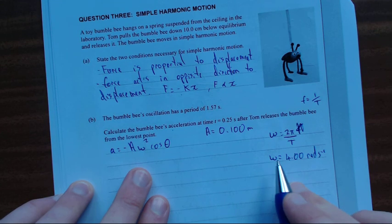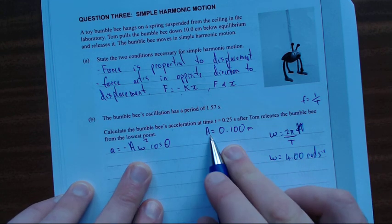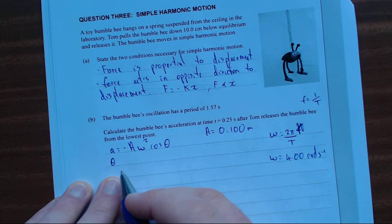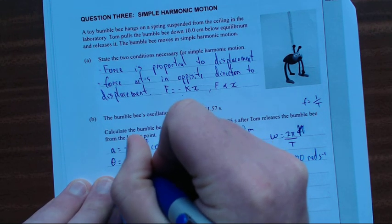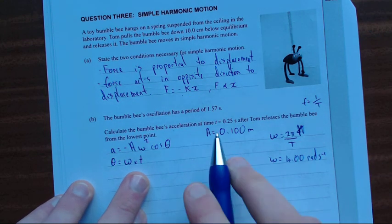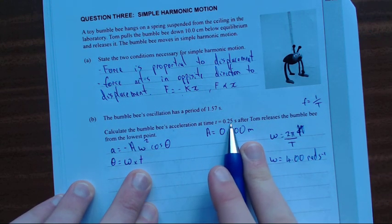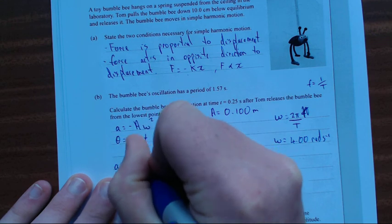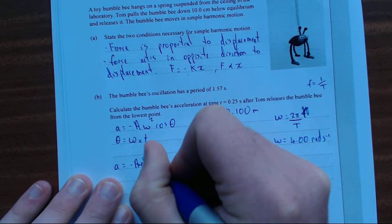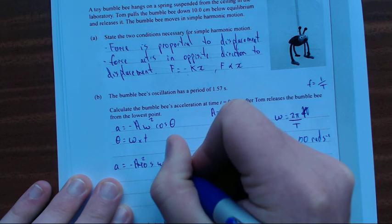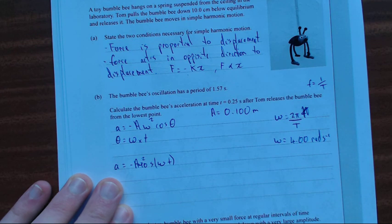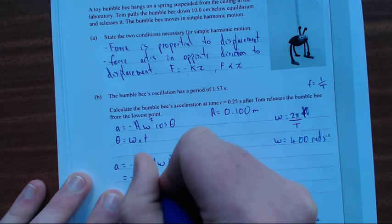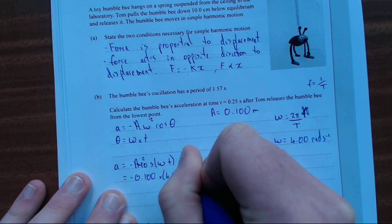We've got angular velocity, we've got the amplitude. I think we've got all we need, but we don't have the angular displacement. But if you just remember from normal distance equals velocity times time, angular distance equals angular velocity times time. We've got the angular velocity, and it's finding the acceleration after 0.25 seconds, so that's our time. We've got everything we need. All we need to do is substitute in. So let's do that now: a equals minus amplitude times angular velocity squared times cos of angular velocity times time.